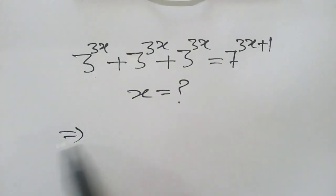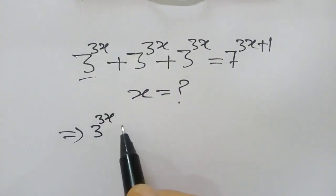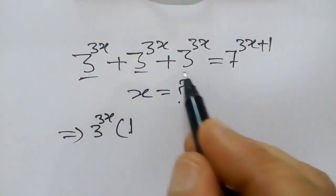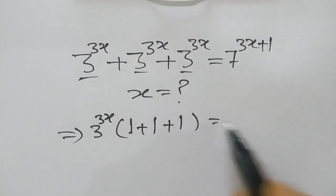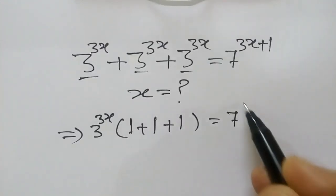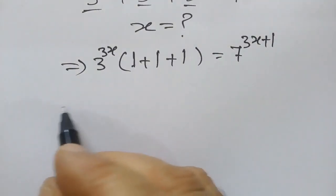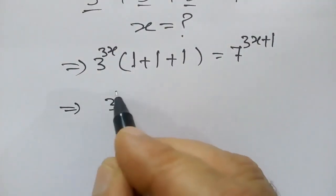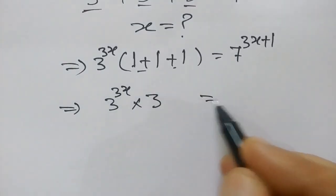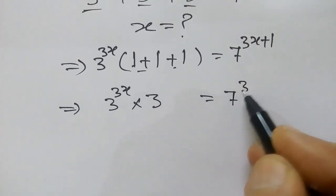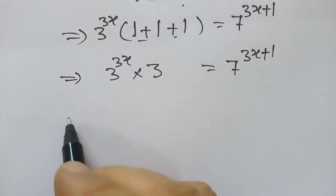If we take 3 to the power 3x common, so we have 1 plus 1 plus 1 is equal to 7 to the power 3x plus 1. Now, 3 to the power 3x into 3 is equal to 7 to the power 3x plus 1.